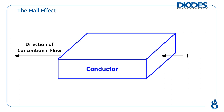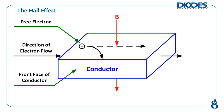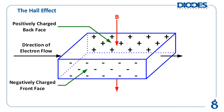To help visualize this, imagine a conductor that has conventional current flowing through it from right to left. Since a conductor's charge carriers are electrons, the direction of electron flow is actually from left to right. Free electrons will flow through the conductor in a straight line from left to right with a uniform distribution. Next, this current-carrying conductor is placed in a uniform magnetic field perpendicular to the direction of current flowing through it. The magnetic field in this example passes through the conductor from top to bottom. The uniform electron distribution is disturbed by this magnetic field and the flowing electrons experience a Lorentz force, forcing them closer toward the front face of the conductor. The front face becomes negatively charged due to the accumulation of free electrons, while the relative lack of free electrons on the opposite side creates a positively charged back face.